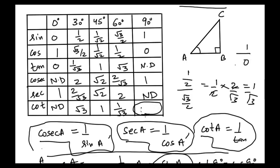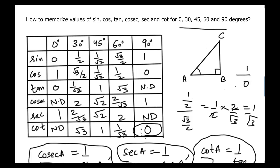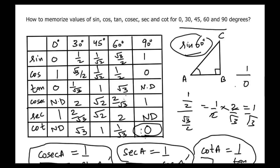I hope you learned something from this video and now know how to fill in this table. When asked for a value like sine 60° or cosecant 30°, you can do the calculations mentally. As you become more practiced, you'll be able to find all six trigonometric ratio values for these angles in your head. See you in the next video.